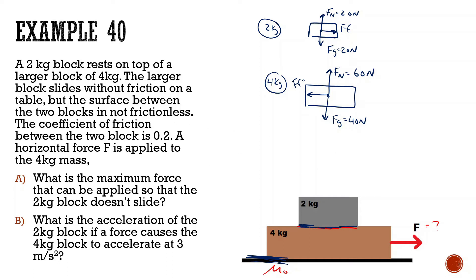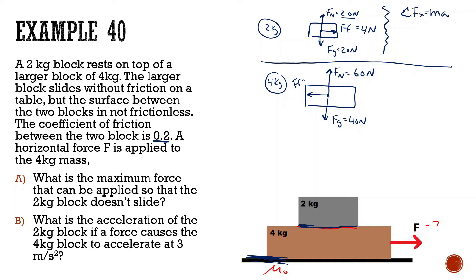Let's figure out the maximum force of friction. The coefficient of friction is 0.2 and the normal force is 20 newtons, so 20 times 0.2 gives us 4 newtons maximum force of friction. Looking at the sum of all forces in x for the two kilogram block: force of friction equals mass times acceleration, so 4 newtons equals 2 kg times acceleration, giving us a maximum acceleration of 2 meters per second squared.